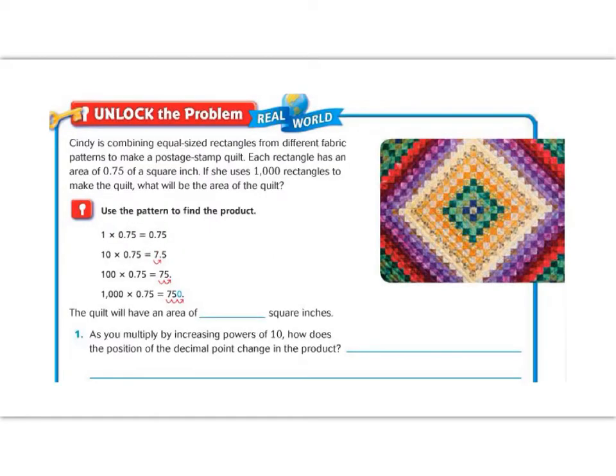Let's begin by reading the Unlock the Problem. Cindy is combining equal size rectangles from different fabric patterns to make a postage stamp quilt. Each rectangle has an area of 75 hundredths of a square inch. If she uses a thousand rectangles to make the quilt, what will be the area of the quilt? Before we move on, let's go ahead and underline our question and our numbers. So our question is, what will be the area of the quilt? And we have the numbers that each rectangle is 0.75 or 75 hundredths of an inch, and she is going to use a thousand rectangles.